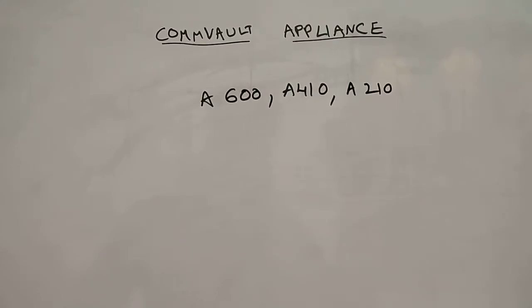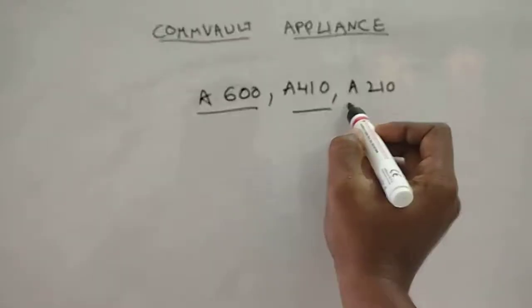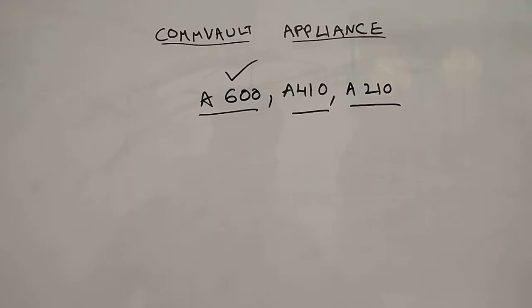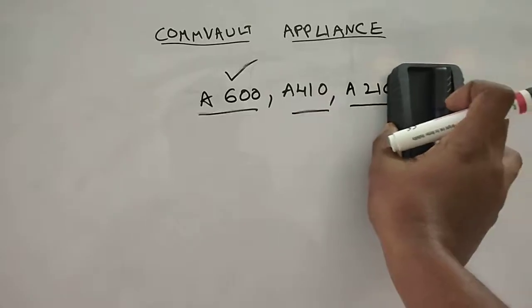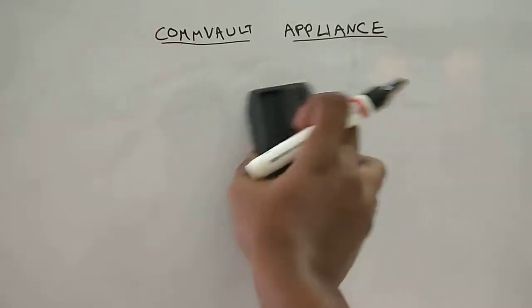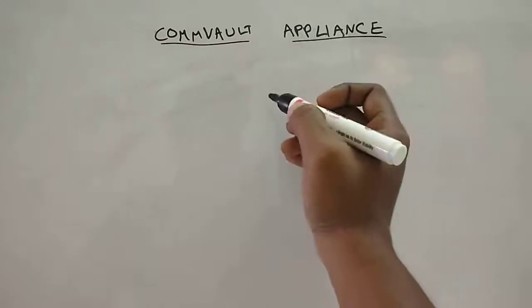Coming to the appliances that Commvault offers, it has A600, A410, and A210. A600 is majorly used, widely accepted, and has been a good success. Let's discuss about A600 architecture and see how it's deployed and what all are the components inside and how is it different with other native storage plus hardware devices.